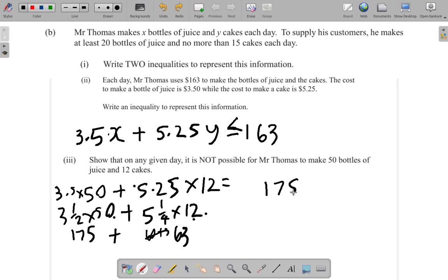So, 175 plus 63. 5 and 3, 5 and 3, 8. 7 and 6, going to be 13. 1 and 1, 2. It would require $238.